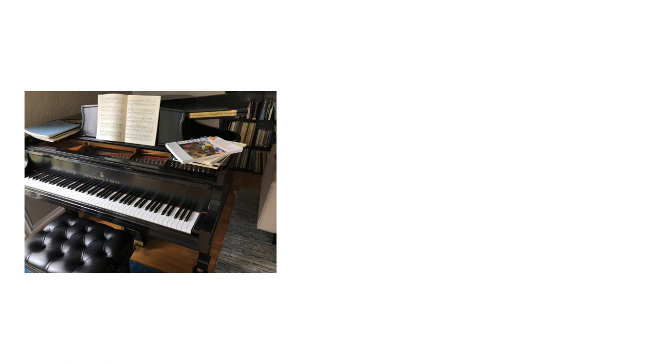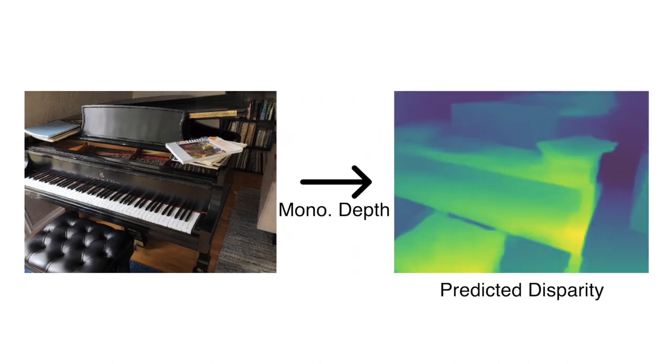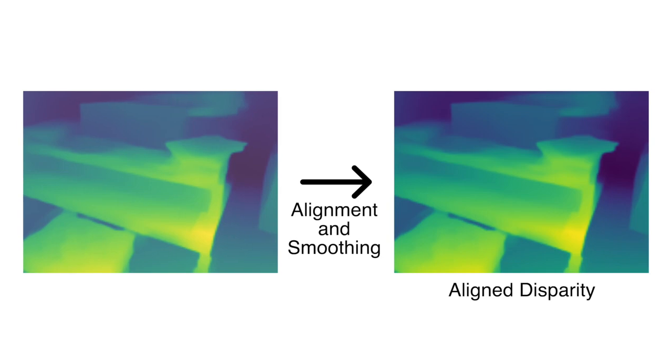For a single reference view, the user first uses an image inpainter to generate the inpainted reference view. The inpainted reference view is then fed into a monocular depth estimator to get the predicted disparities, which are then aligned to the coordinate system of our NeRF model using our weighted alignment and disparity smoothing components.